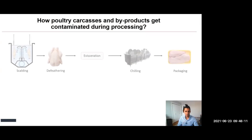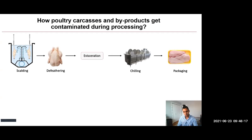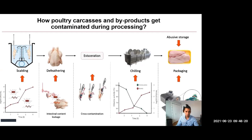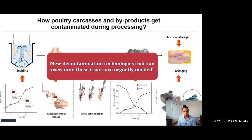These colonized birds are transferred to the processing facilities where they can consistently shed this bacterium throughout the whole processing steps, starting from scalding all the way to packaging. The industry is applying different antimicrobial interventions to prevent this contamination, although based on the numbers, there are questions being raised about the efficacy of these interventions. Therefore, there is a constant look for new decontamination technologies that can be either coupled to or replace the current ones.